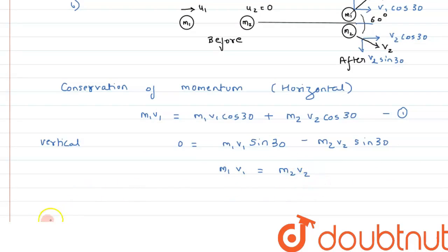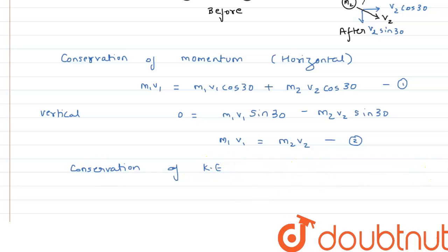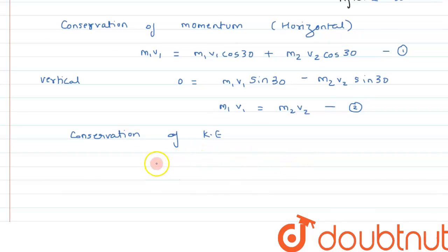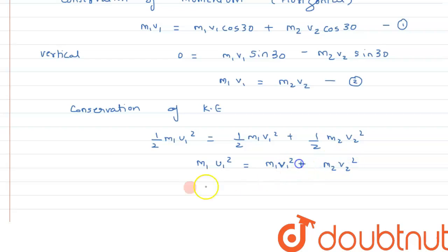By conservation of kinetic energy for an elastic collision: (1/2)*m1*u1² equals (1/2)*m1*v1² + (1/2)*m2*v2². The halves cancel, giving m1*u1² = m1*v1² + m2*v2². This is equation number three.